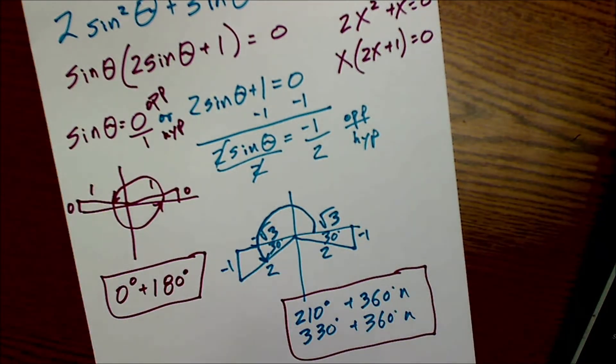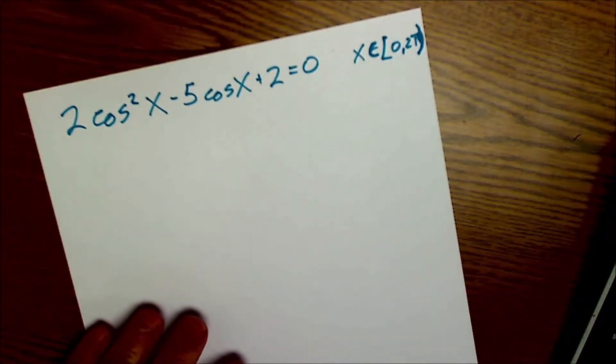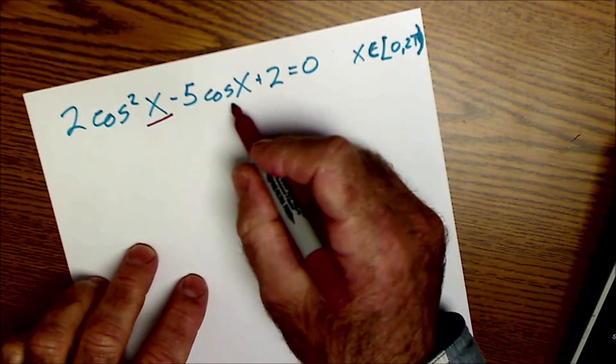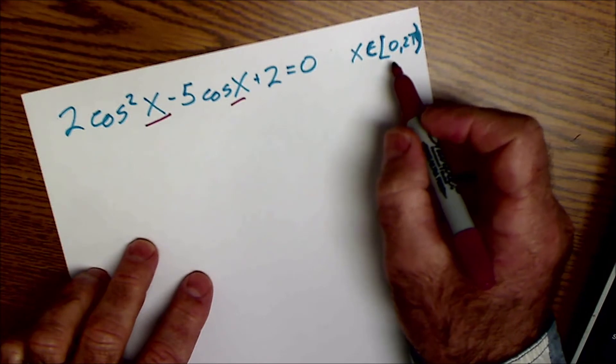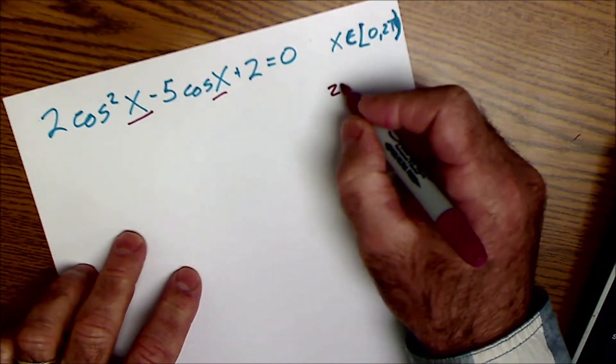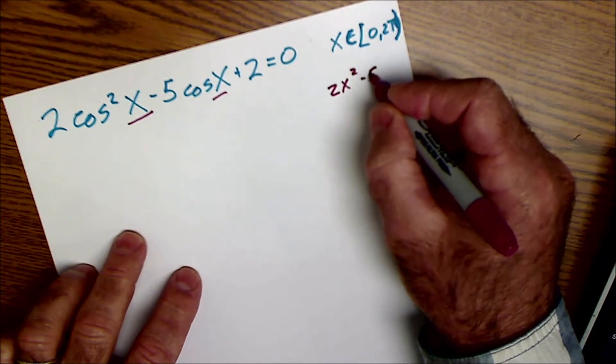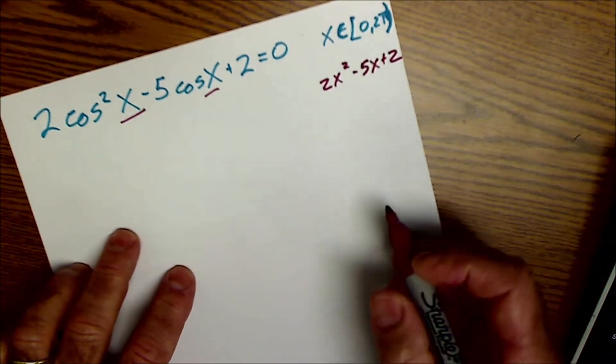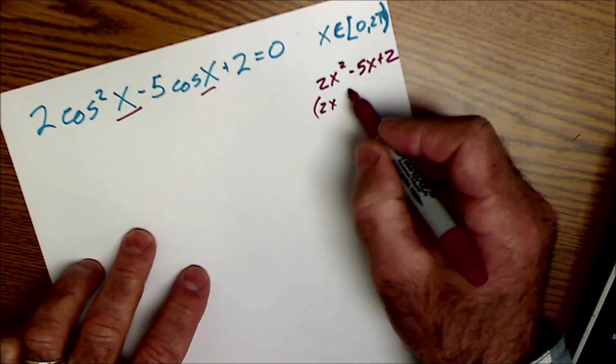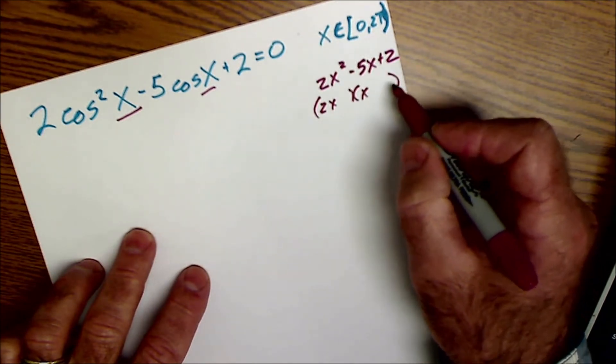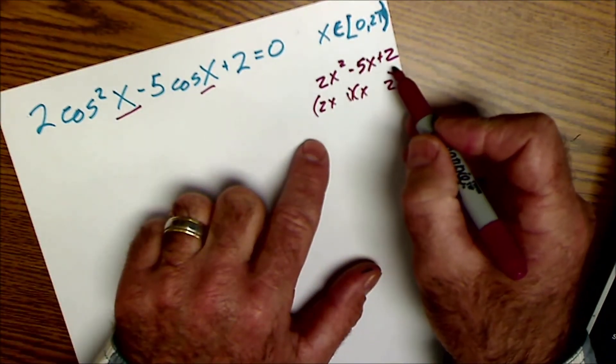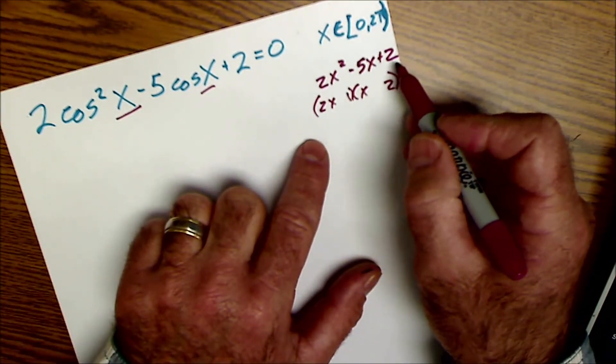Okay, one last problem. This problem right here. First thing I know is that we're talking about x. So we're in radians. And then my domain is from 0 to 2 pi. This kind of looks like 2x squared minus 5x plus 2. If it were an algebra problem, I could factor that to 2x and x. Factors a 2 or a 2 and a 1.